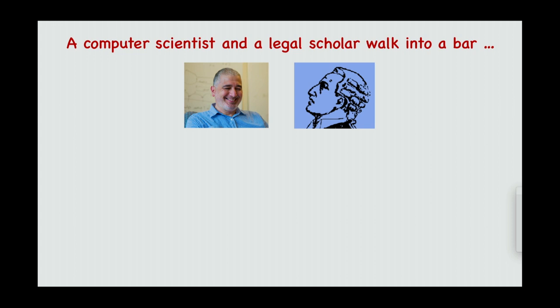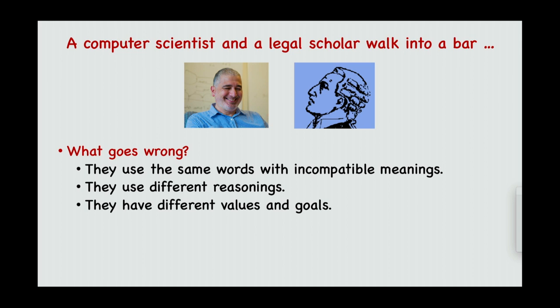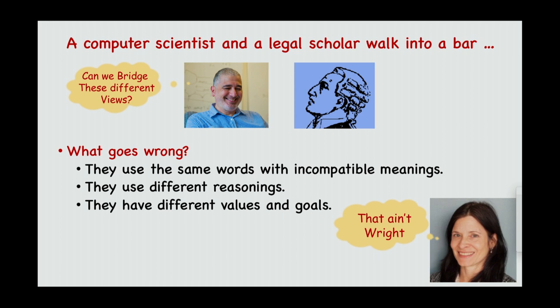This is a talk I've given a few times recently. I cut it from a talk that originally took about 90 minutes, and I only have 30 minutes now. The thing about a computer scientist and legal scholar walking into a bar — this is the beginning of a joke because a lot should go wrong. They use the same words but have completely different meanings, very different reasonings, and very different values and goals. I'll ask whether we can bridge these very different views, focusing on questions related to privacy, which is my main interest and expertise.